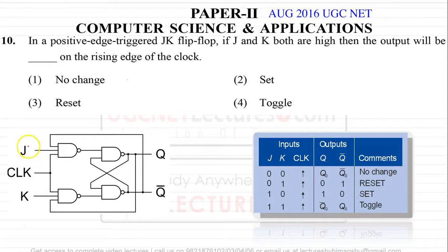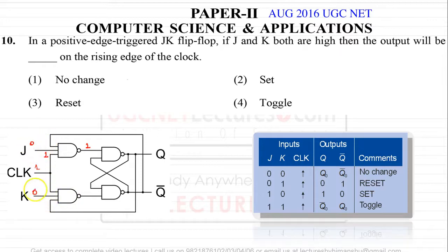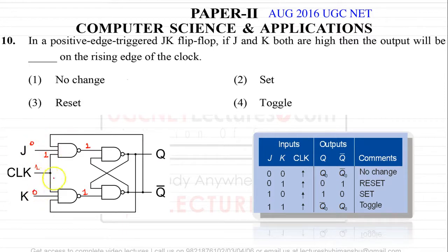When J equals 0, K equals 0, and clock equals 1: applying these values, 0 becomes 1 (complement), then 1 into 0 is 0, and complement of 0 is 1. Working through the gate outputs, we get 0 and 1 at the inputs, resulting in output unchanged. The output remains Q and Q-bar — same as previous.